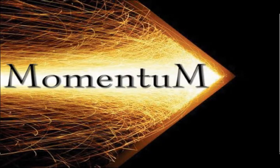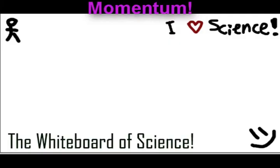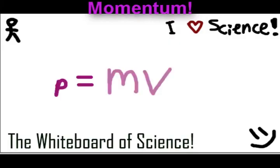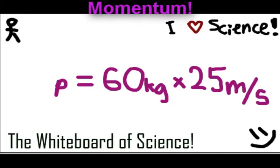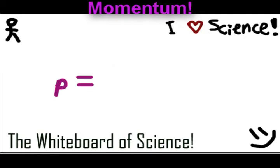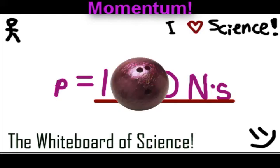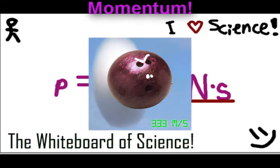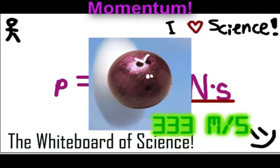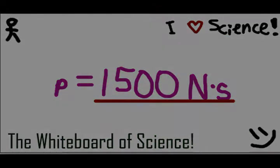We can also find out their momentum at the bottom of the hill. P equals mv. Notice that the p is small in this case because it represents momentum, not power. And the answer comes to approximately 1,500 newton seconds. This is equal to a 15-kilogram bowling ball moving at a near supersonic speed of 333 meters per second. Not bad, huh?